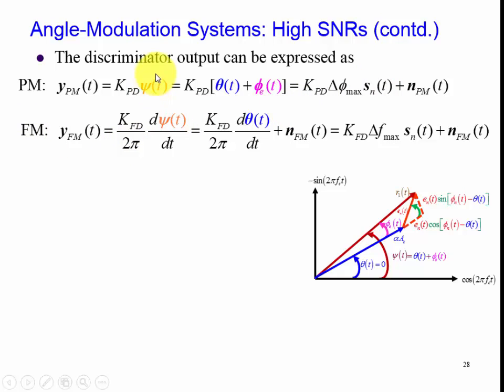And then the FM case, the only difference is that we take the derivative of the angle to give us units of hertz or radians per second. Since this expression here where we take d phi dt divided by two pi has units of hertz, hence this has units of volts per hertz, this K_FD.